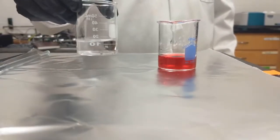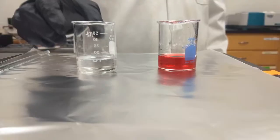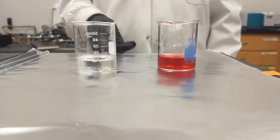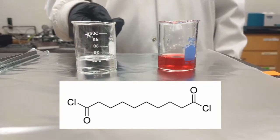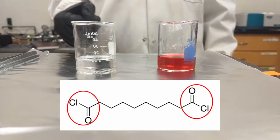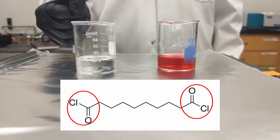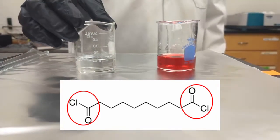In our other beaker, we have the hexanes and this contains the acid chloride. This means that this monomer has an acid chloride functional group on either end. This is made up of carbon, oxygen, and chlorine.